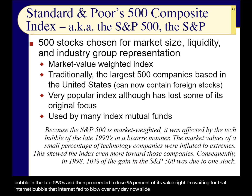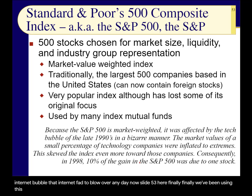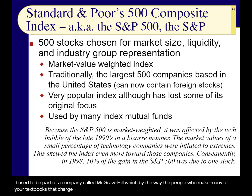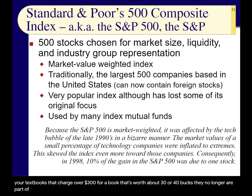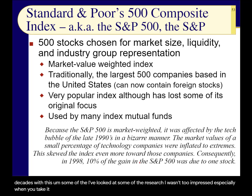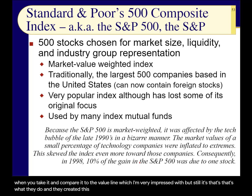Slide 53. Finally — we've been using this thing all semester — the Standard & Poor's 500. Who is Standard & Poor's? It's a company, and it used to be part of McGraw-Hill, the people who make many textbooks that charge over $300 for a book worth about $30 or $40. They've since split apart. Standard & Poor's does research, and they've been doing it for decades. They created this 500 composite index — the S&P 500 — many, many decades ago.